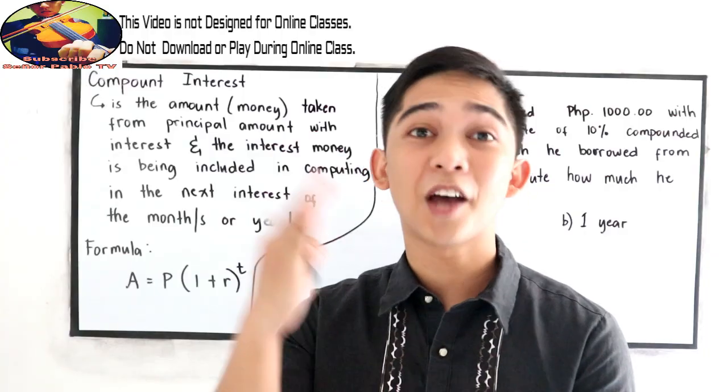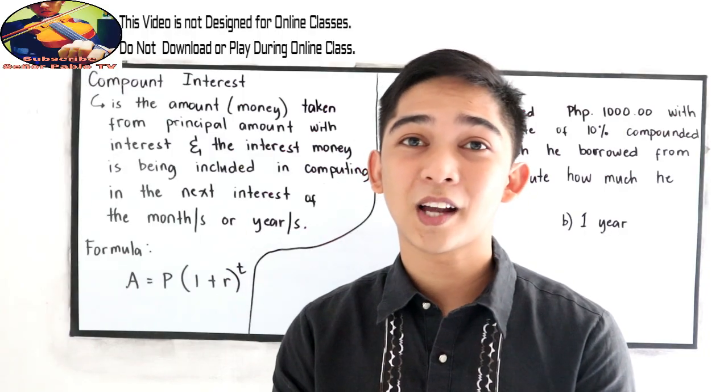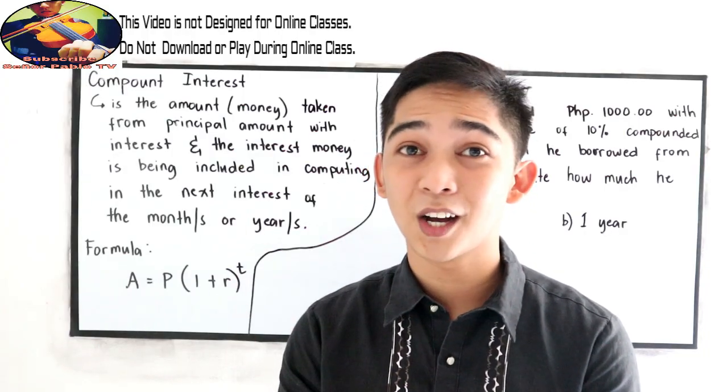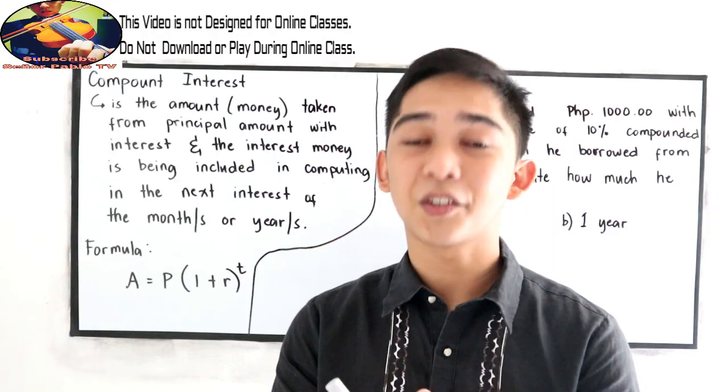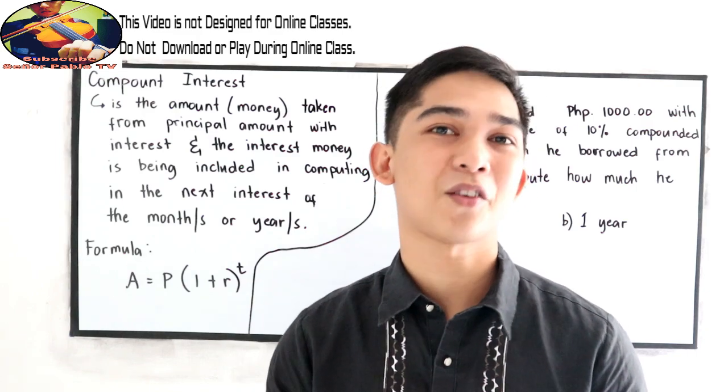Then on the other month, the principal will become the $1,100 plus another interest. So that is the compound interest.